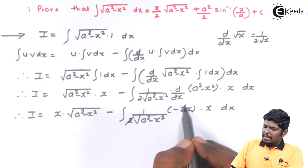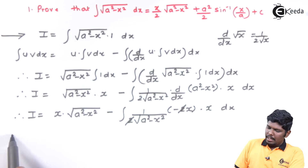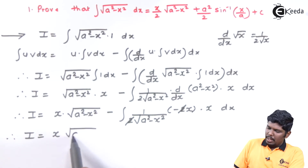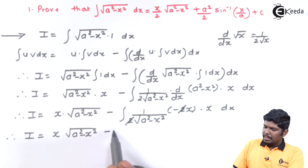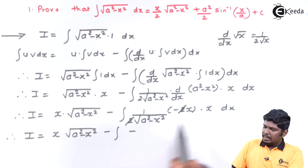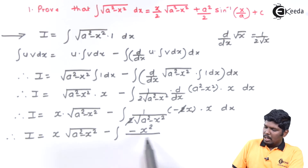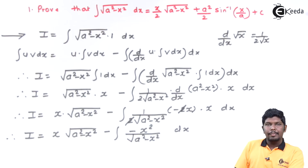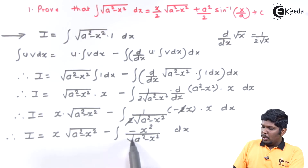The 2 cancels, and the remaining part gives us i = x√(a² - x²) minus the integral of x²/√(a² - x²) dx. In the next step, we are going to adjust the numerator term.